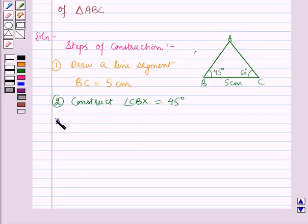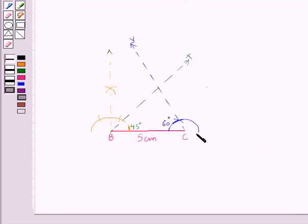And now in the third step we will construct an angle BCY equal to 60 degrees. As you can see here we have constructed an angle BCY which is equal to 60 degrees.